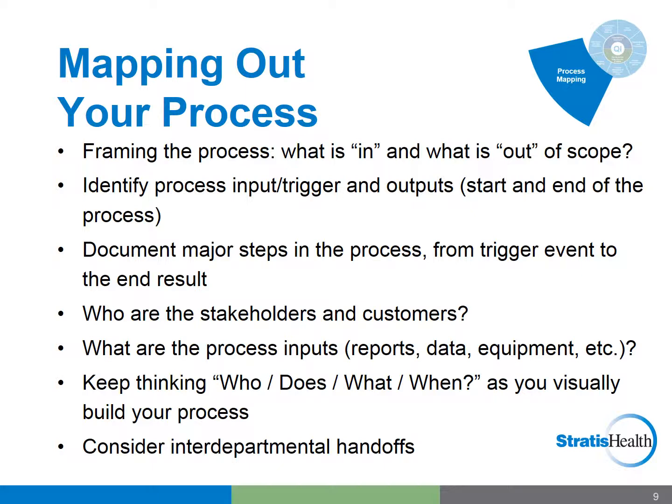Consider what process inputs are needed or used in the series of tasks within the process, such as reports, data, equipment, etc. As you start to diagram your process, keep thinking who does what and when. Also consider if there are any interdepartmental handoffs. Your end result may be that you hand off work or the result to another department. If other departments or possibly outside organizations are involved along the way, you may need to consider those as separate processes that impact your process or are impacted by your process. A simple example of framing a clinical process — a patient coming in for lab work — is to identify the starting point as a patient arriving and the endpoint as when they complete their lab work and leave the facility. Processes that are impacted downstream include specimens being sent to the lab, the process of receiving the results, a process to inform the provider of the results, and so on.